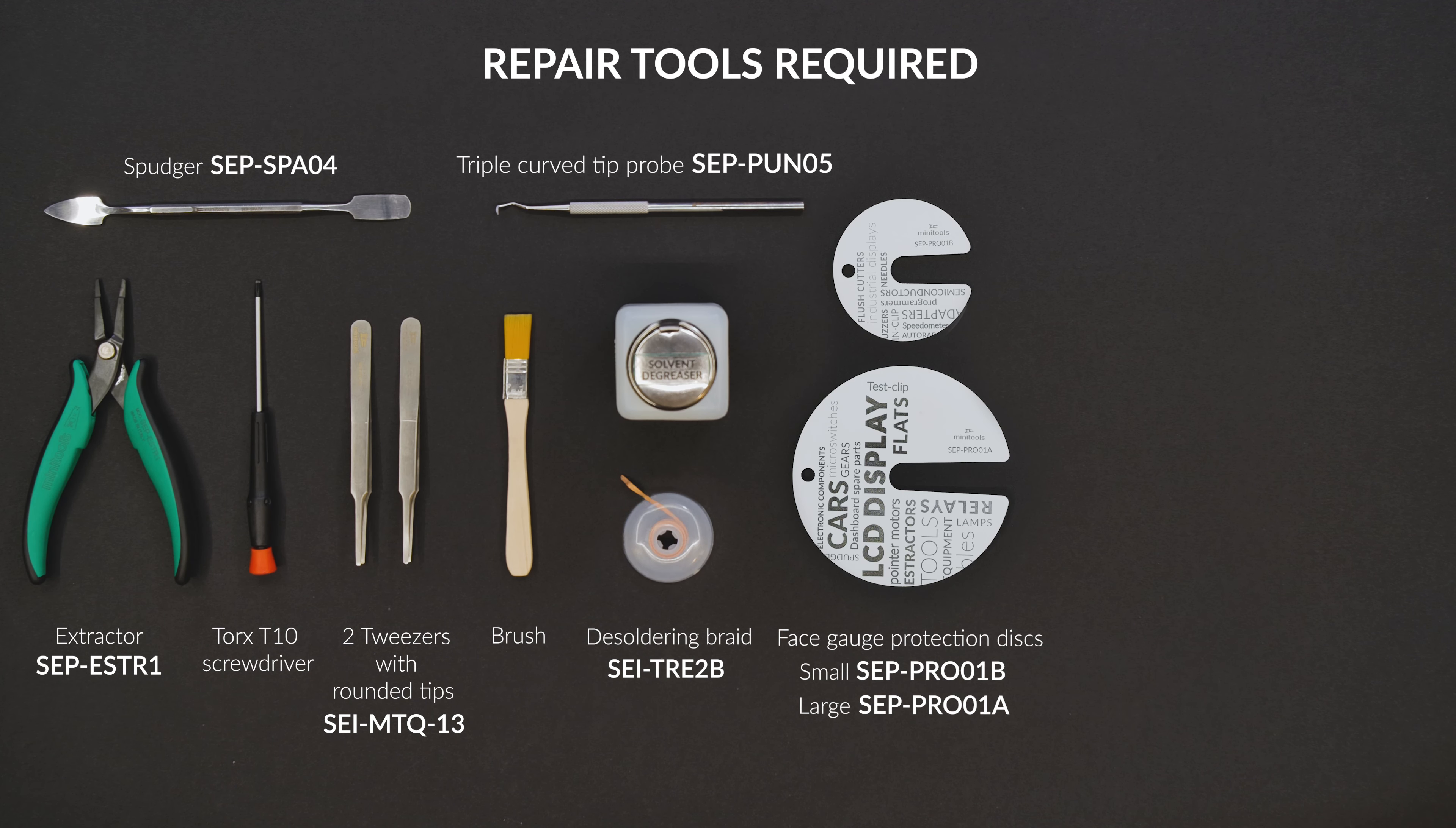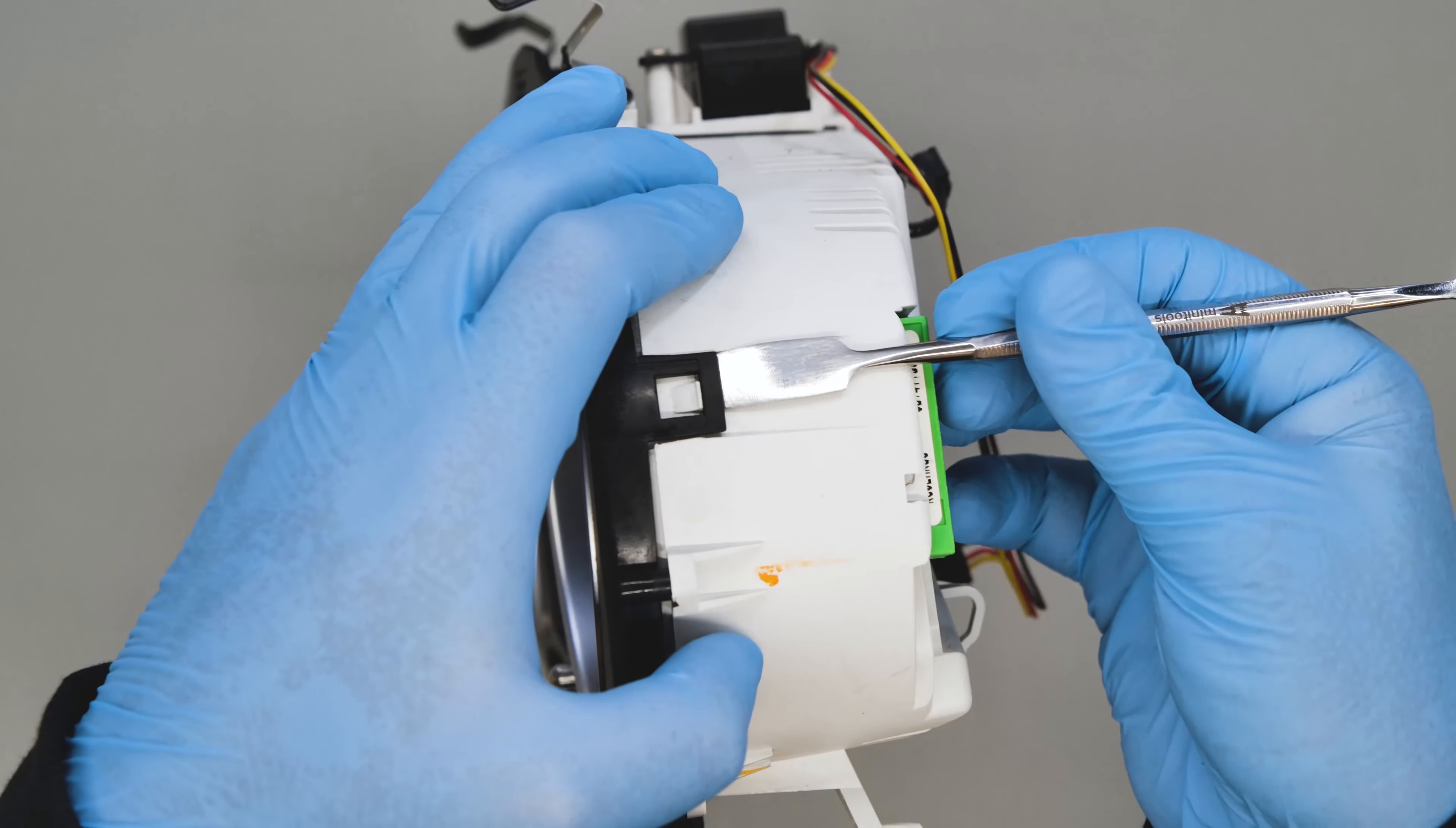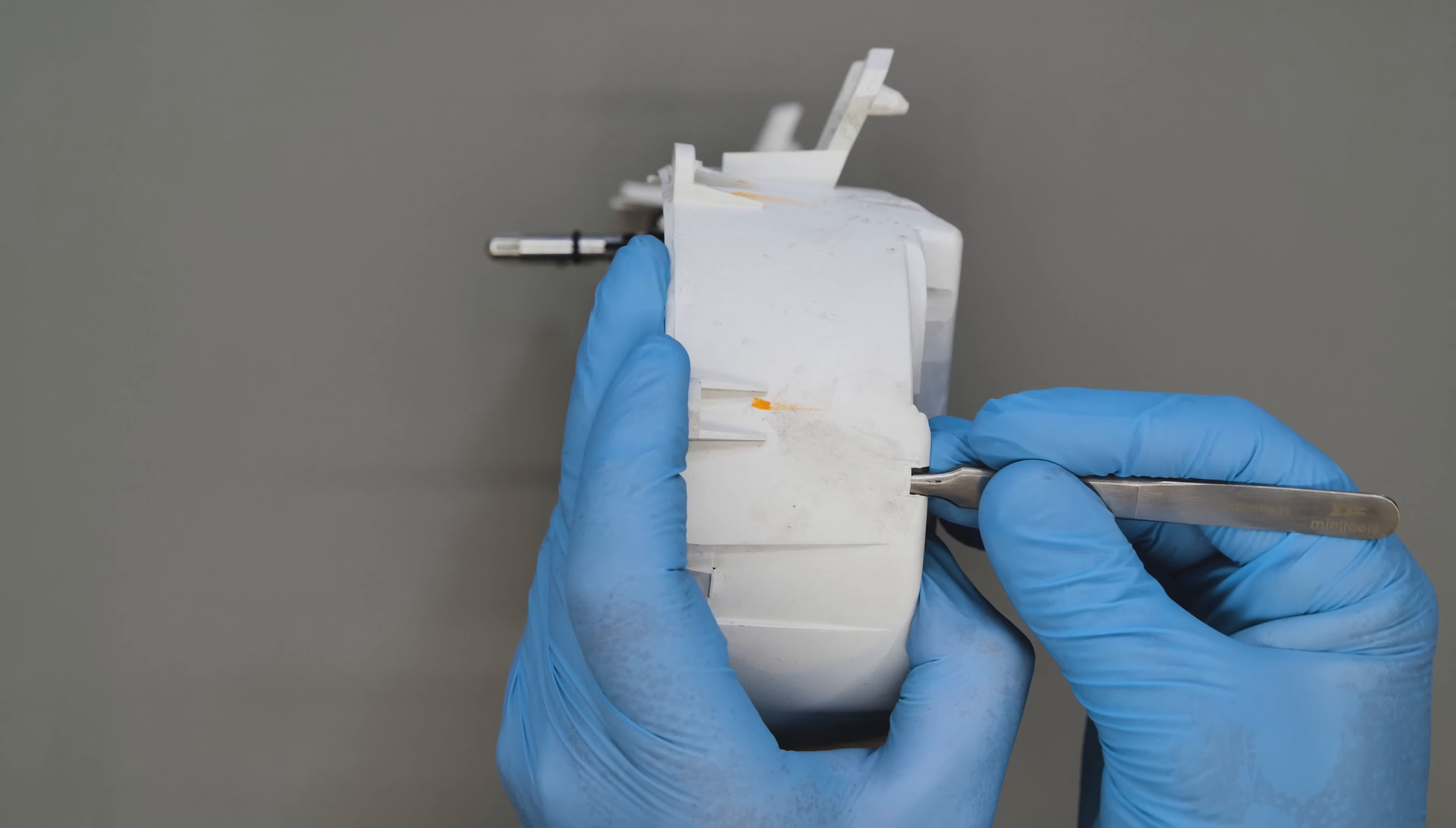Position the dashboard as shown and unscrew the gold screws using a torque screwdriver. Use the spudger to remove the front part of the dashboard. Then release the plastic backing using the tweezers.